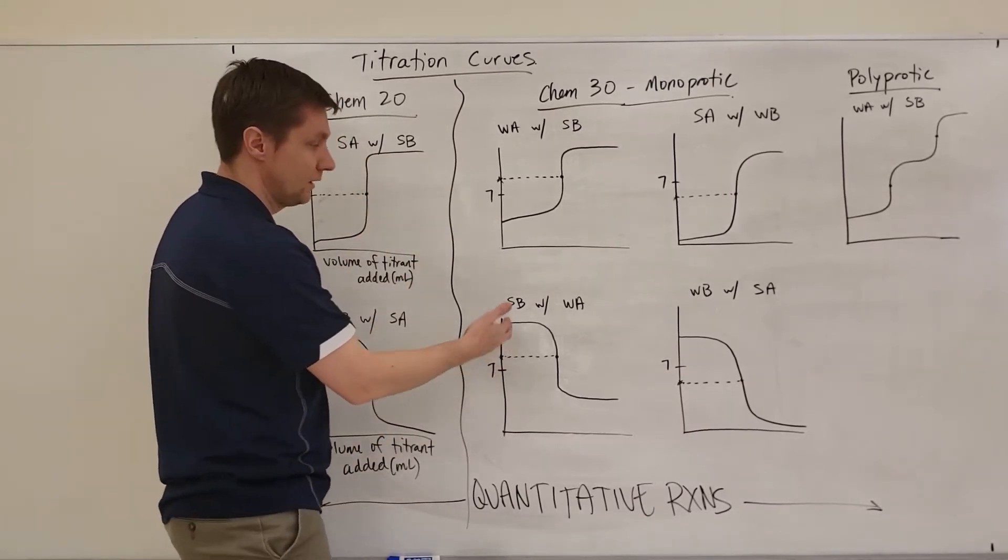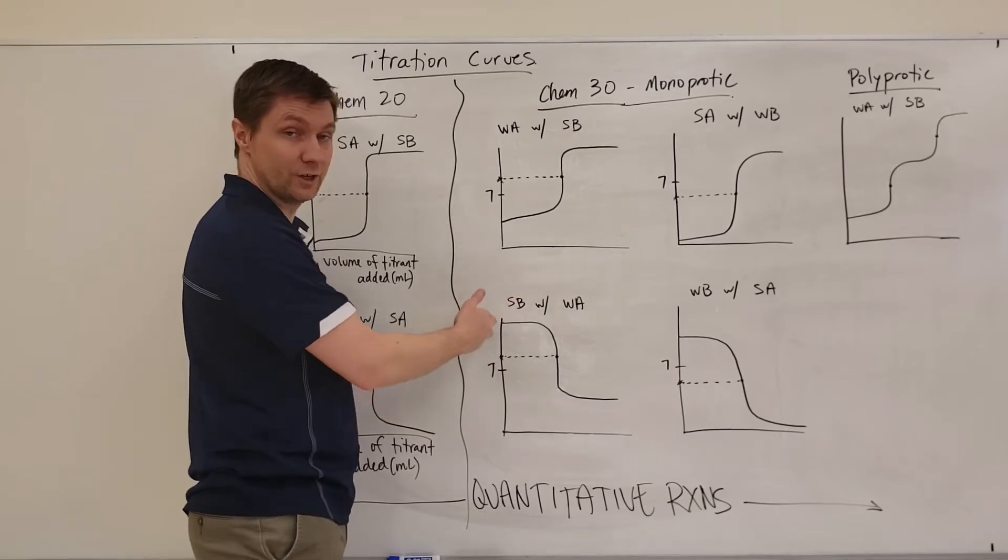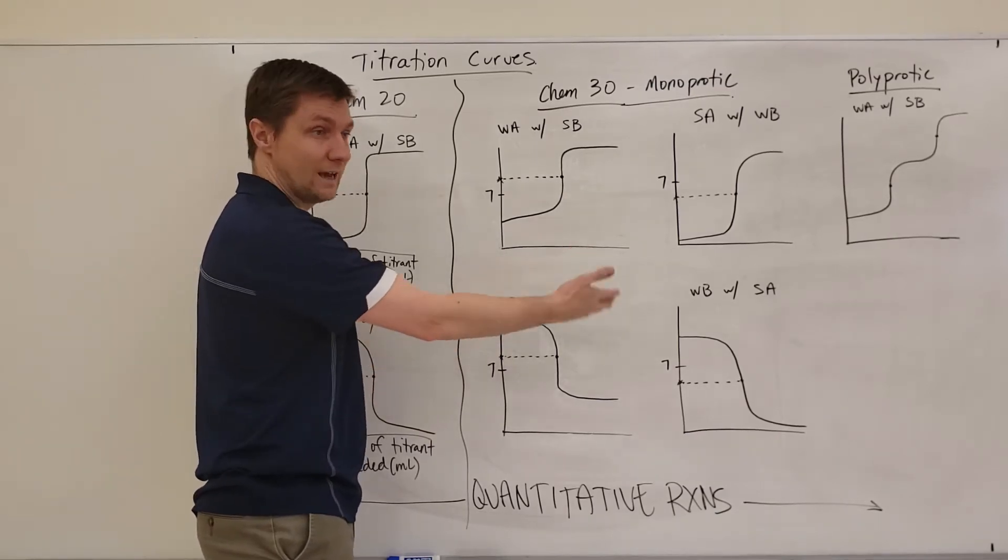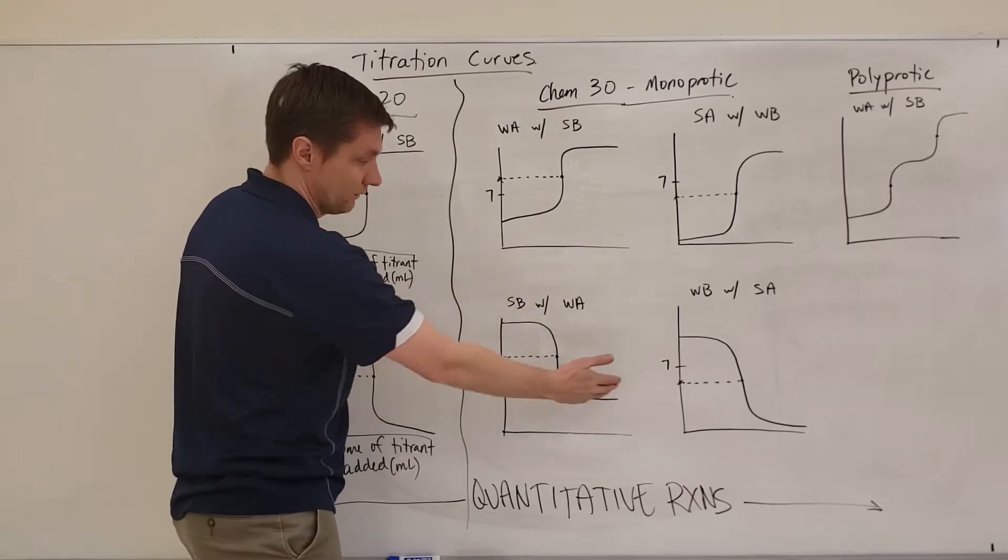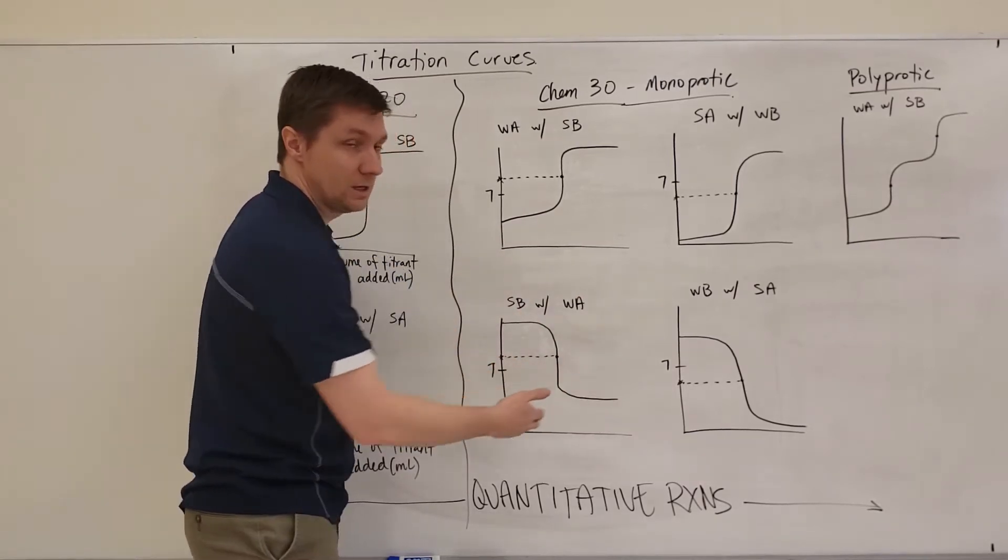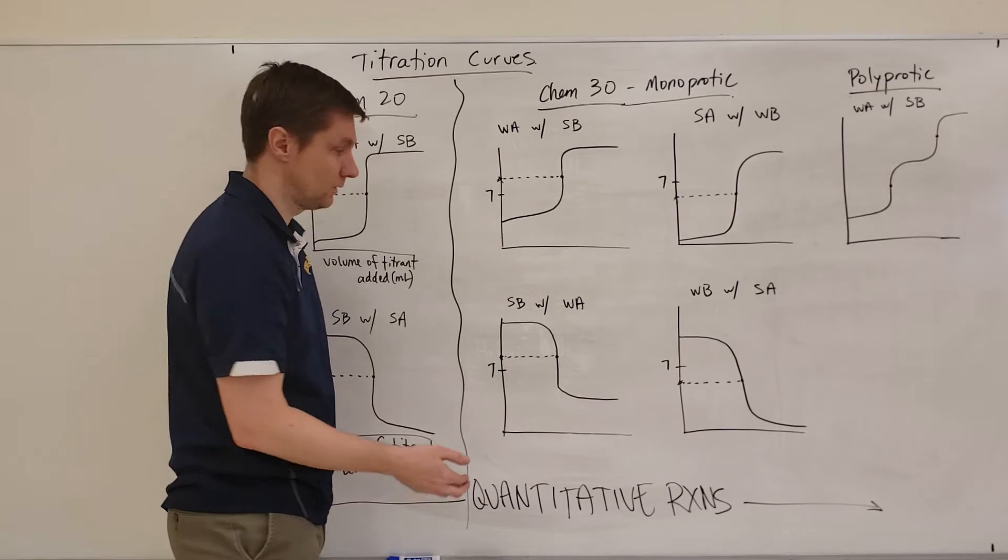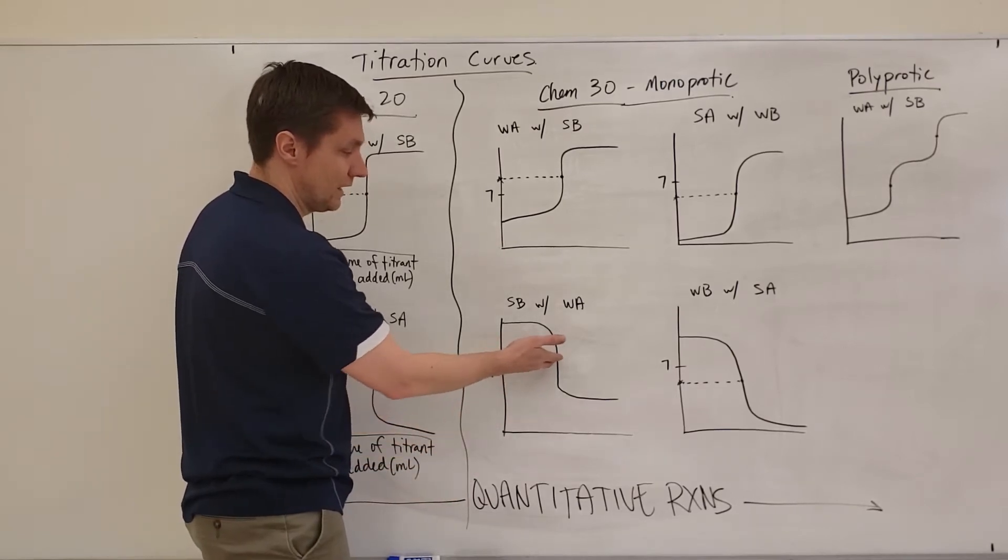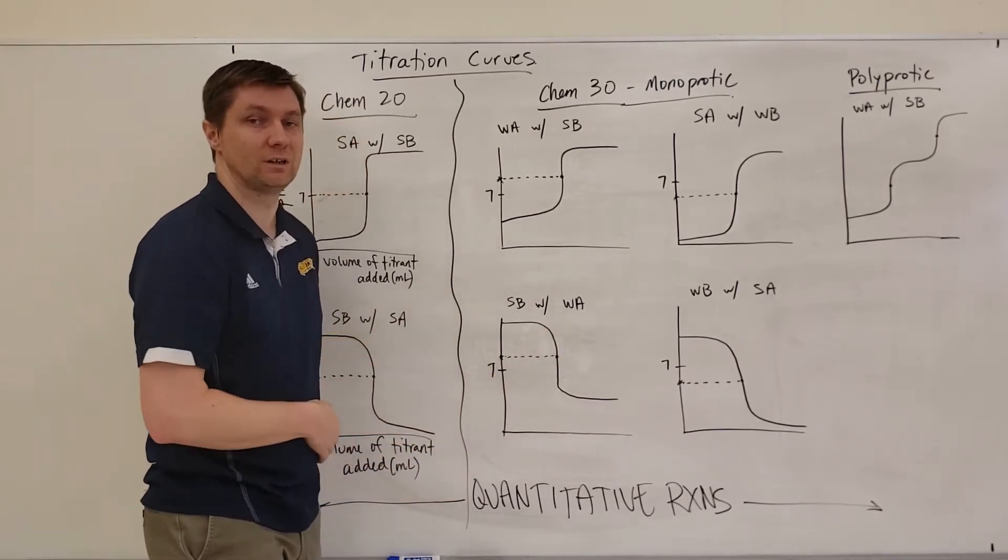And same thing here if I switch them, but still titrating or now I'm titrating a strong base with a weak acid. I get my curve that looks like this. I'm going to end off with a pH that's a lot higher than a strong base would have. And so because of that, it shifts my equivalence point above 7 again.